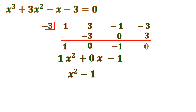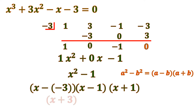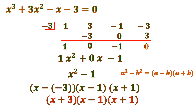Notice that x squared minus 1 is a difference of two squares, where the rule is a squared minus b squared equals (a minus b)(a plus b). Since 1 can be written as 1 squared, this factors as (x minus 1)(x plus 1). So the full factored form is (x minus negative 3) times (x minus 1) times (x plus 1), which we rewrite as (x plus 3)(x minus 1)(x plus 1) — because minus negative 3 equals plus 3.